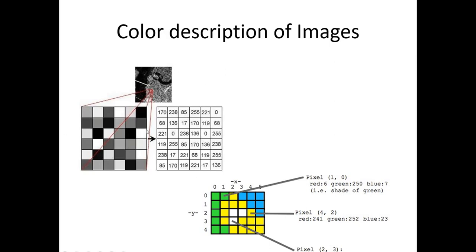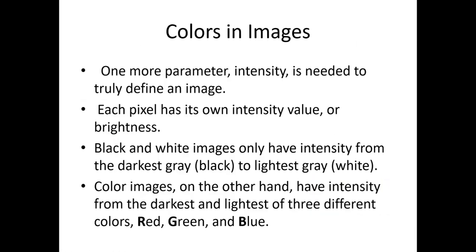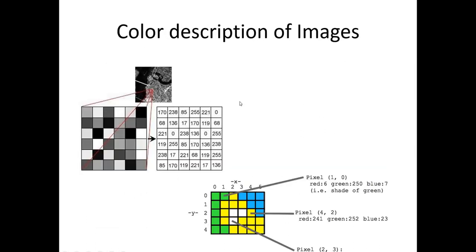To clarify the difference: a black-and-white image has only values of 0 or 255 — no middle values. A grayscale image has a full range between black and white, forming different shades of gray. Both the coordinate points and the intensity values together represent the pixel. Every digital image is ultimately expressed as a matrix — rows and columns of numbers.